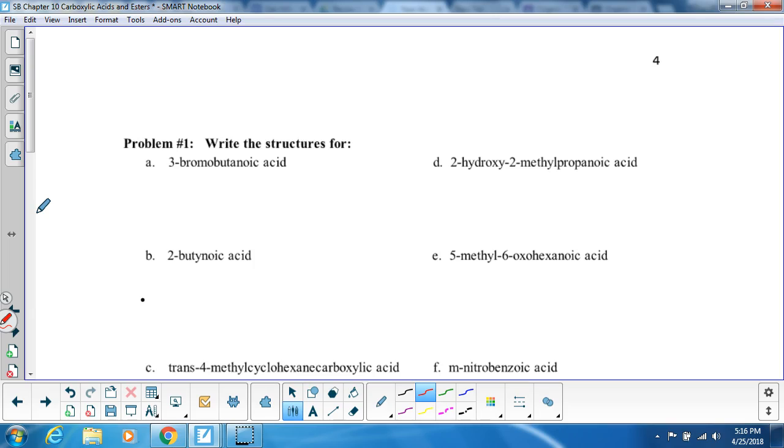Problem number one is write the structures for 3-bromobutanoic acid. How do I deal with this? Always look at your end here, butanoic acid - how many carbons will that be? That is 4 carbons. The end one is always C double bond OH, and if there's any side chains off of it,